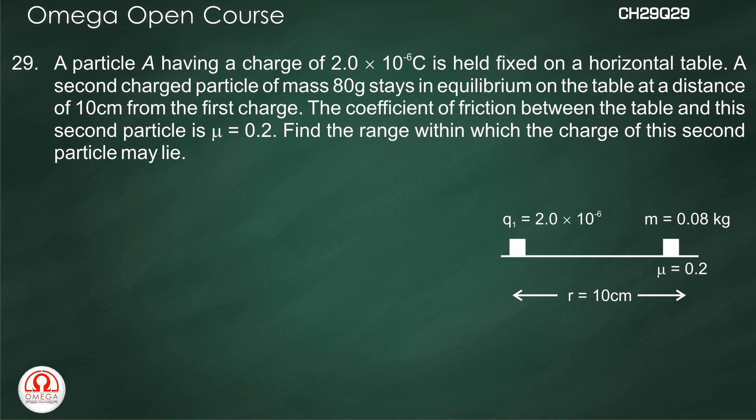A particle A having a charge of 2 × 10⁻⁶ coulombs is held fixed on a horizontal table. A second charged particle of mass 80 grams stays in equilibrium on the table at a distance of 10 cm from the first charge.